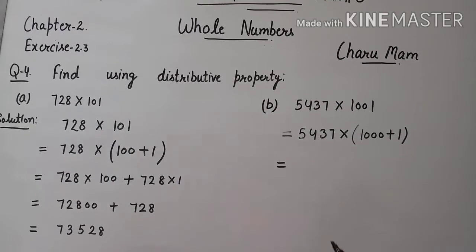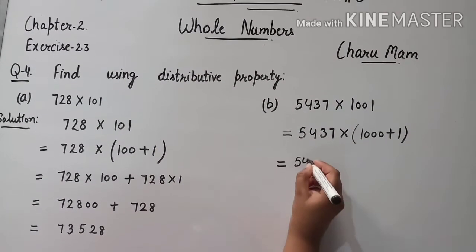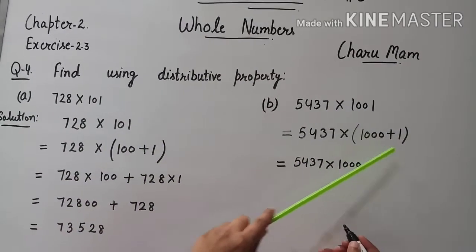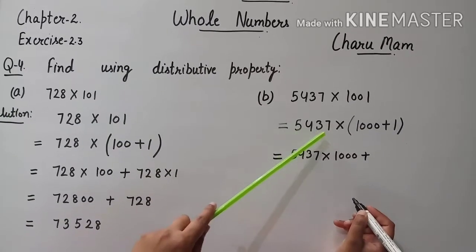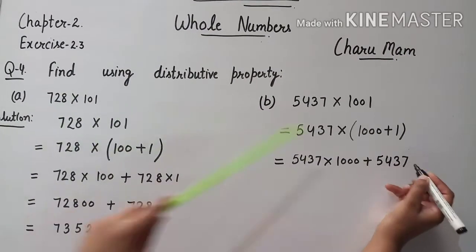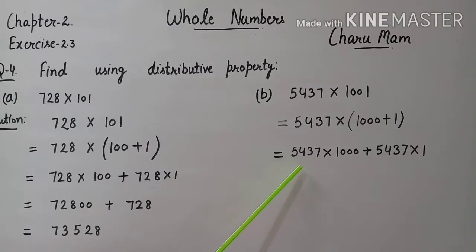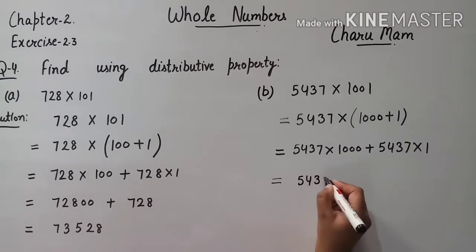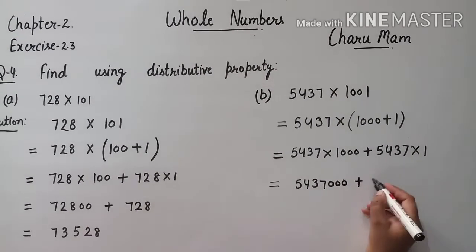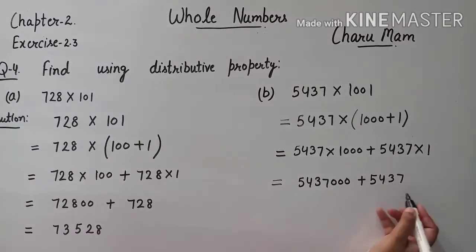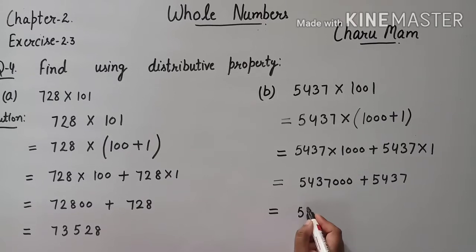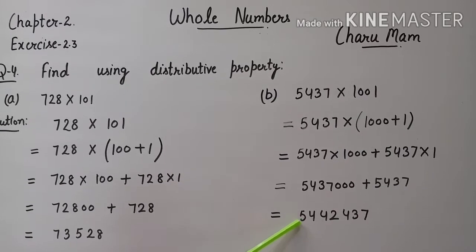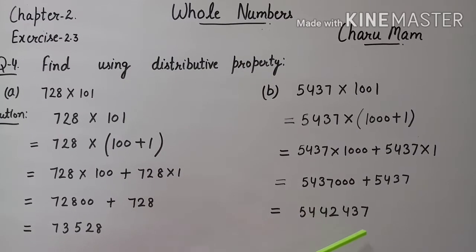अब हम distributed property apply करेंगे. So, first of all, 5,437 को 1,000 से multiply करेंगे, then plus, अब हम 5,437 को 1 से multiply करेंगे. अब हम इन्हें multiply करेंगे, then हम 5,437 को 1 से multiply करेंगे — तो ये as it is आएगा. अब हम इन्हें plus करेंगे. तो plus करके क्या बना? 54,42,437.